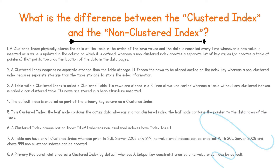Three: a table with a clustered index is called a clustered table. Its rows are stored in a B-tree structure, sorted. Whereas a table without any clustered indexes is called a non-clustered table, and its rows are stored in a heap structure, unsorted.